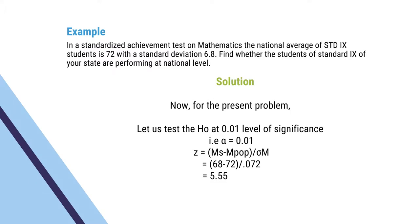For the present problem, let us test the null hypothesis at 0.01 level of significance. We will also check at 0.05 level of significance. Let alpha equal to 0.01. The Z value equals sample mean minus population mean divided by standard error of mean — so, 68 minus 72 divided by 0.72, which equals 5.55. Our Z value is 5.55.